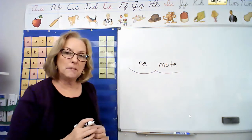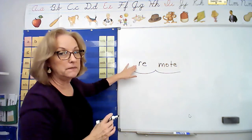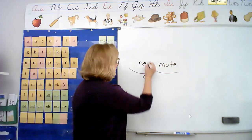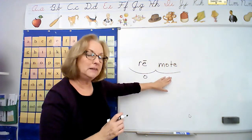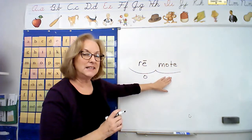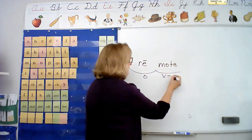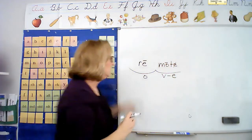And now let's mark our syllables. My first syllable is open, closed, or vowel consonant e? It's open, isn't it? My vowel is long. My second syllable, open, closed, vowel consonant e? I bet you said vowel consonant e. Therefore my o is long, my e is silent. Remote.